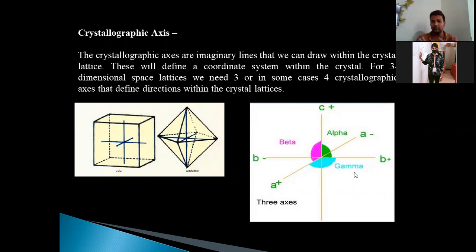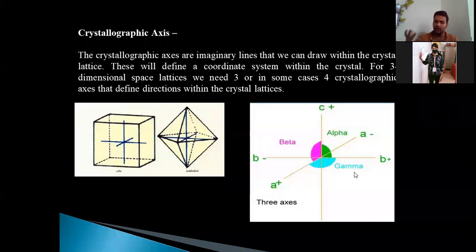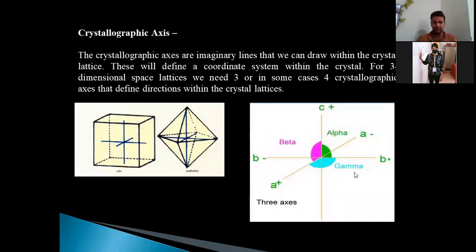The majority of crystal systems have perpendicularity in their axial angles, whereas some crystal systems show inclinations. Alpha, beta, and gamma come into play where inclination is present. Otherwise, if there is a 90-degree angle, you don't need to refer to them as alpha, beta, or gamma. Let us now see in detail about the crystallographic axes.